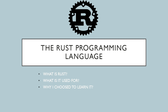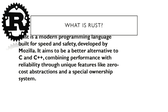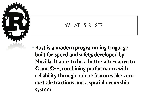So let's start with: what is Rust? Rust is a modern programming language built for speed and safety, developed by Mozilla. It aims to be a better — or rather, safer — alternative to C and C++. You can write low-level system code with a safer approach, without dealing with crashes and unsafe code.